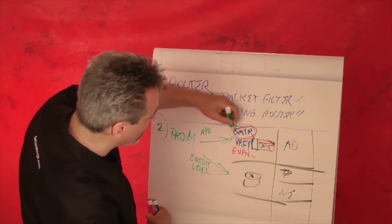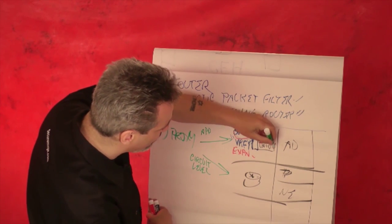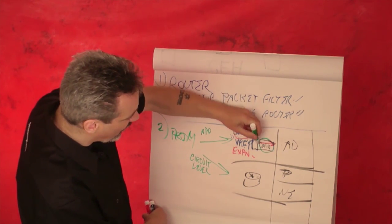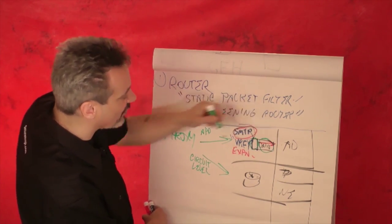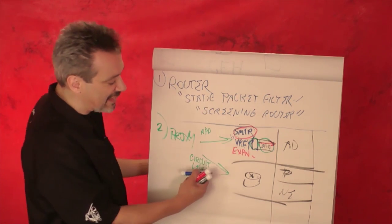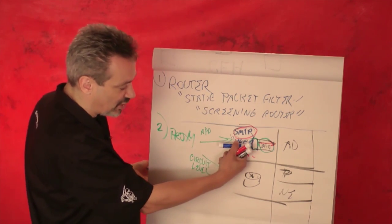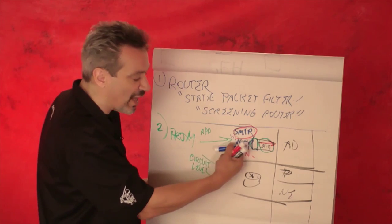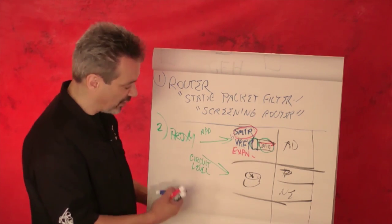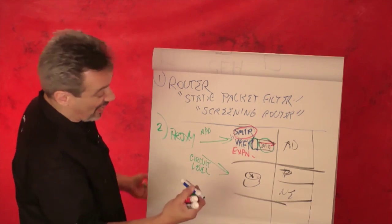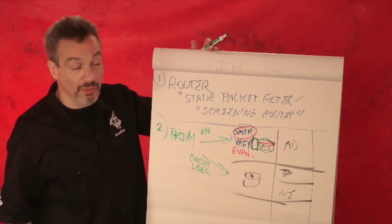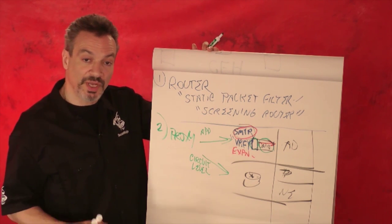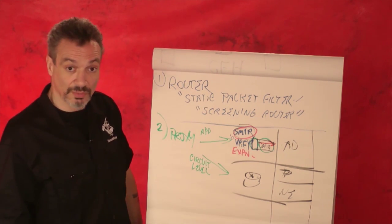But an application layer proxy would go further. The application layer proxy is not doing deep packet inspection — it is looking at headers and validating: is that HTTP behind port 80? And within that, is it a valid command? That would be the safest way to go. But the downside to doing all that is it's slow.